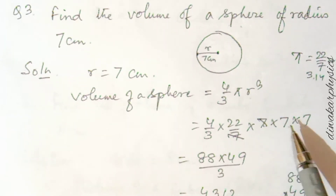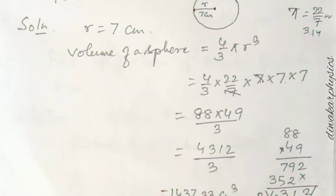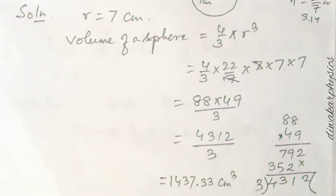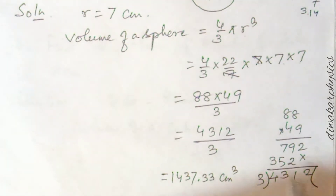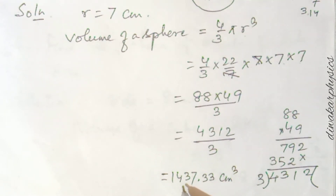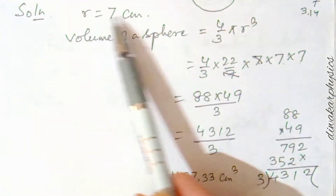r³ means 7 × 7 × 7. Cancel the 7 in the denominator with one factor of 7 in r³, then multiply and divide the rest. It is very important to show rough work on the same page — draw a line on the side and do rough work there. The answer is 1437.33 centimeter cube.